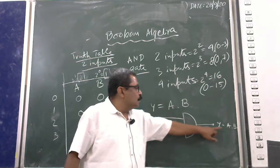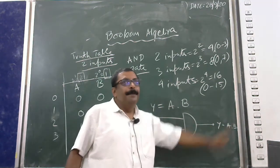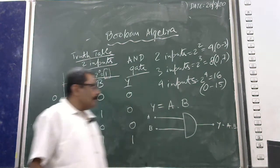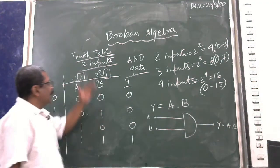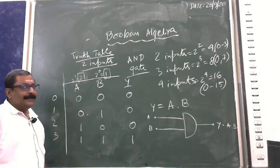The expression is Y = A·B. That is the AND gate — with its truth table, expression, and circuit diagram.